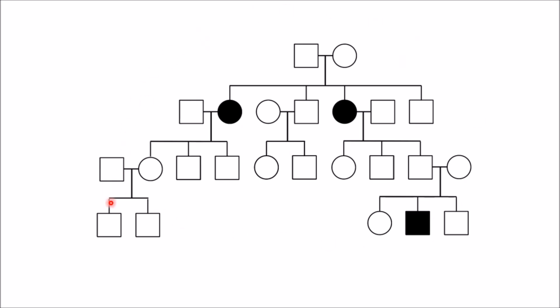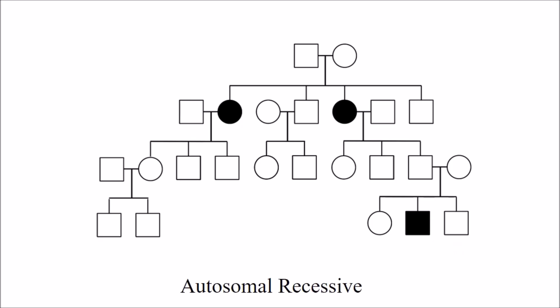In this pedigree chart, skipping of generation is seen, so it is recessive. There is no male-to-male transmission, so it could be autosomal recessive or X-linked recessive. However, both females and males are affected, which favors autosomal recessive disorder over X-linked recessive inheritance.